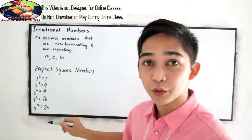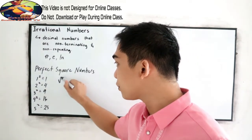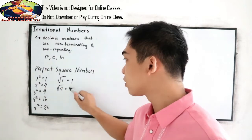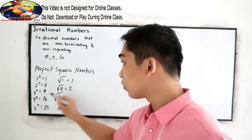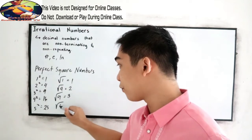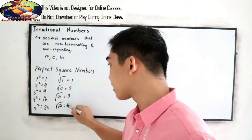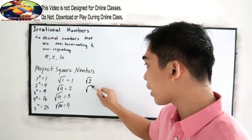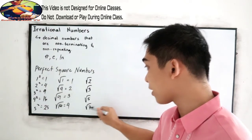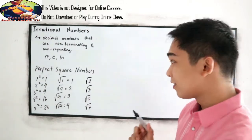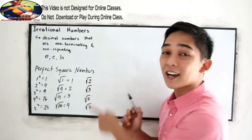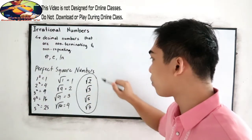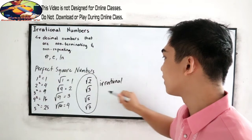If we get the square root of those numbers: square root of 1 = 1; square root of 4 = 2; square root of 9 = 3; square root of 16 = 4. But if we have square root of 2, square root of 3, square root of 5, or square root of 7 — the numbers inside the radical are not perfect squares, so these are examples of irrational numbers.